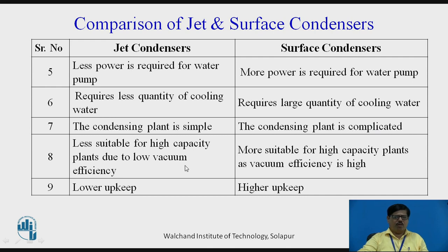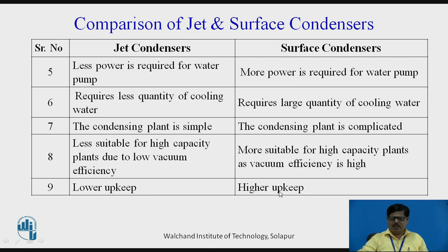In case of a jet condenser, the vacuum produced is not high, so these are not suitable for high capacity plants and are normally used for low capacity plants. Whereas in case of a surface condenser, due to high vacuum produced, these are more suitable for modern steam power plants. In case of a jet condenser, because it is simpler, less maintenance and lower upkeep are required, whereas in case of a surface condenser, more maintenance cost and higher upkeep are required.